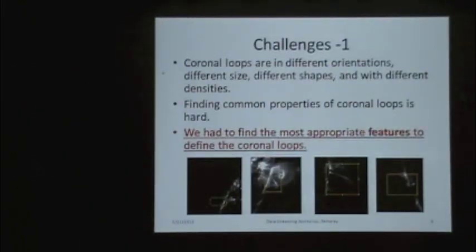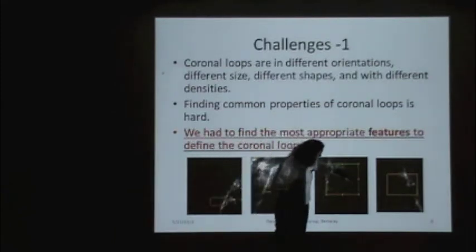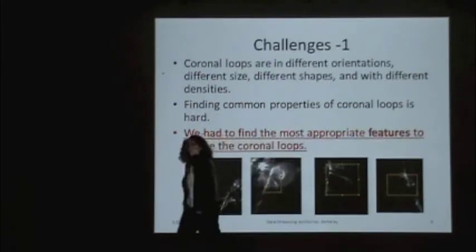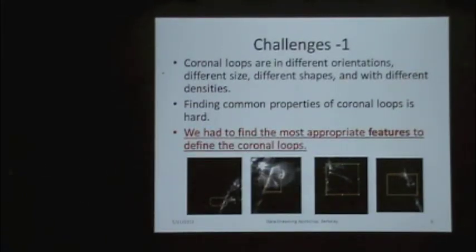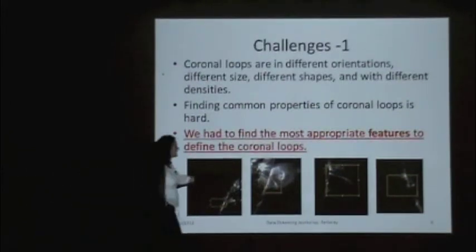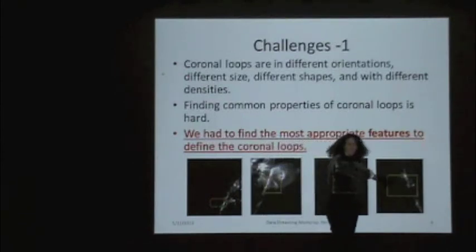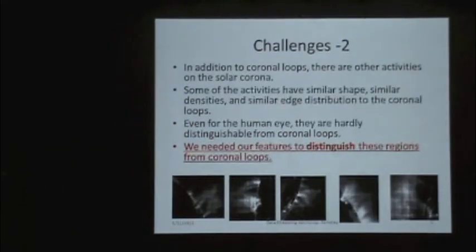We have lots of challenges in this project. First, all coronal loops are in different shapes, different sizes, and their density is changing. For example, here density is very high. Here it is losing intensity in this part. When we apply image cleaning techniques, in this last example, nothing is left after image cleaning. Coronal loops are not the only events. There are other solar events that share some characteristics with coronal loops, so we have to learn coronal loops and other events and make distinction between those events.